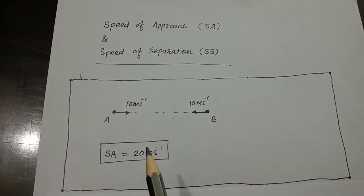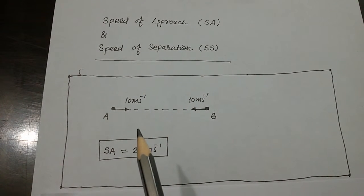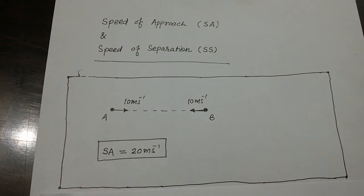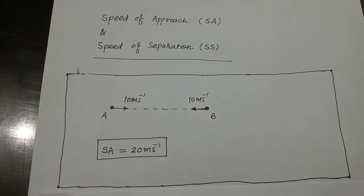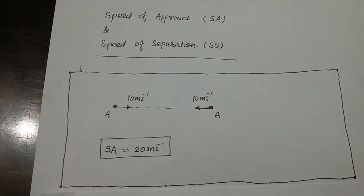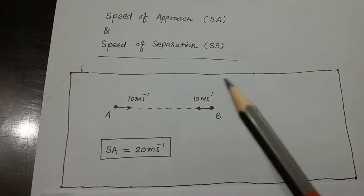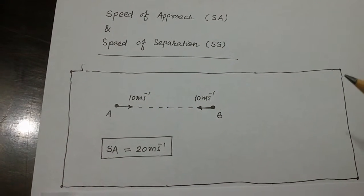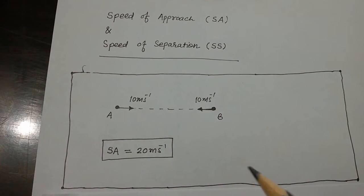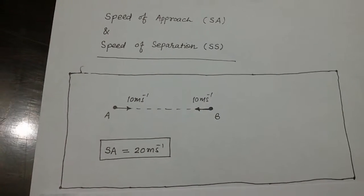At this moment these two particles are coming close — their separation is decreasing at a rate of 20 meters per second. So what is speed of approach? Speed of approach is nothing but the rate at which separation between two particles decreases. And similarly, speed of separation is the rate at which separation increases.